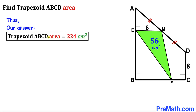Therefore, after all the calculations, the area of trapezoid ABCD turns out to be 224 centimeter square. That's our final answer. Thanks for watching — please don't forget to subscribe to the channel for more exciting videos!